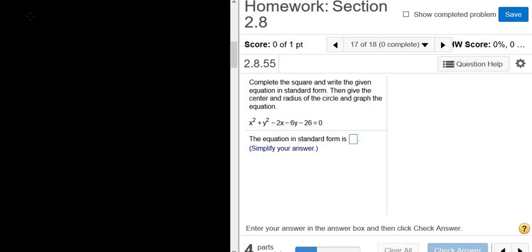In this video, we have to write the equation of the circle in standard form. The equation given is x squared plus y squared minus 2x minus 6y minus 26 equals 0.